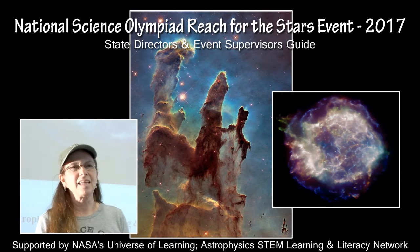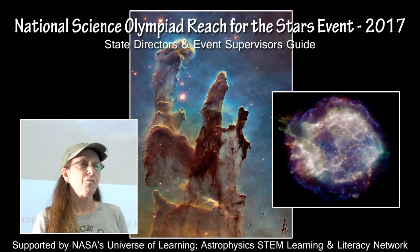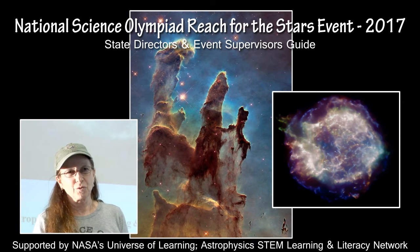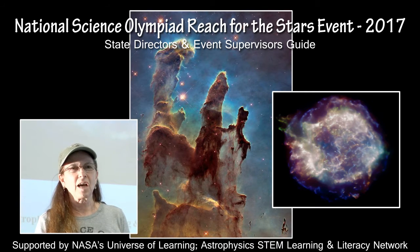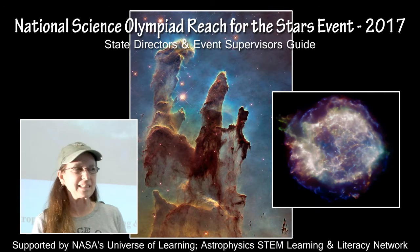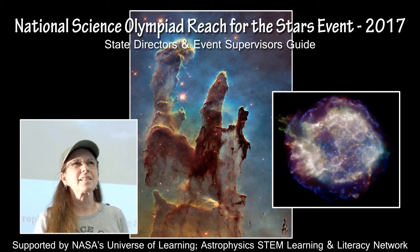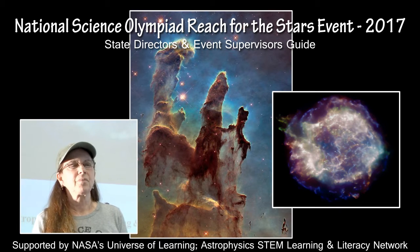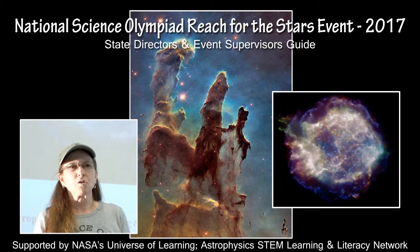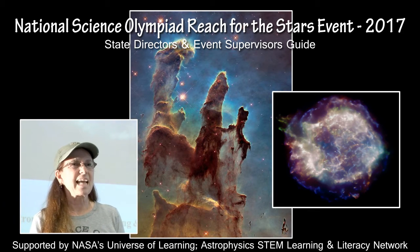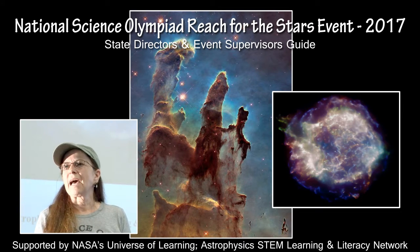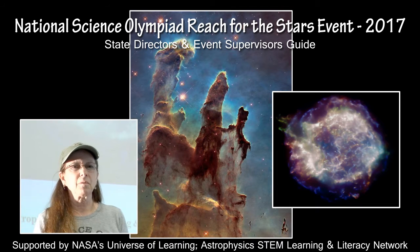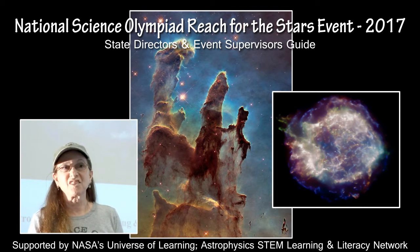This presentation is a general guide for state directors and event supervisors involved with the Reach for the Stars event for National Science Olympiad for the competition year of 2017. It is focused on the logistics of actually setting up and running the event — not so much on the content, but how to develop the event, the logistics of the room, the writing of the event, and how to access the resources that have been developed to assist you.